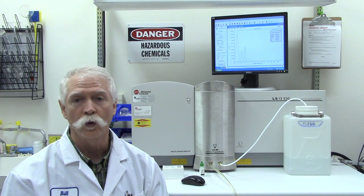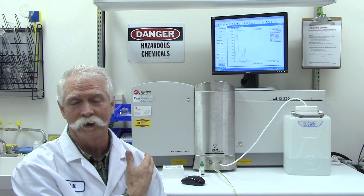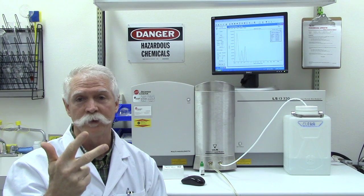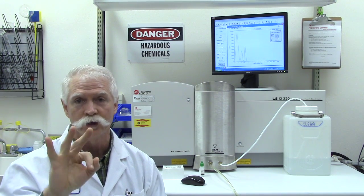Secondly, use a control. We have three controls for the LS13320 and the ULM. We've got the Latron, which will help you demonstrate the PID's capability. We have the Garnet at 15 micron, and then we have the Glass Beads at 500 micron. Those are three good data points.